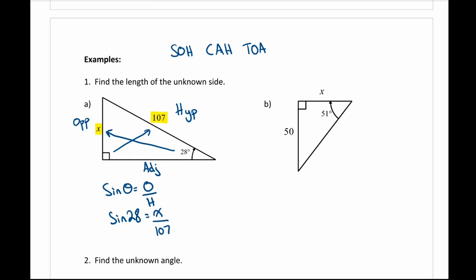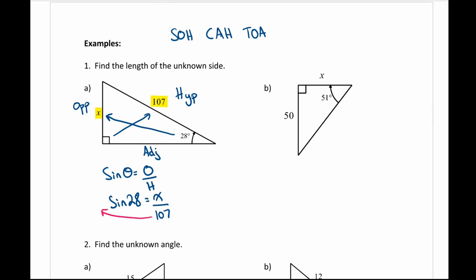We have one of two options when finding a side. When the missing piece is on the top and we're given the bottom, we bring the bottom number up and multiply: 107 × sin28° = x, which gives approximately 50. Make sure your calculator is in degree mode — if unsure, check online for your model number. You should be getting 50 when you do this calculation.